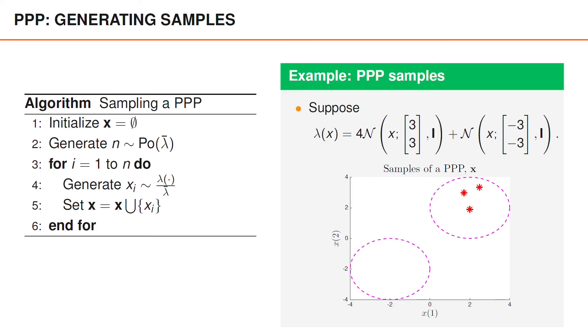For completeness, we can also visualize samples from a Poisson point process. To make things a bit more interesting, I have not assumed that the intensity function is constant within a certain area. Instead, I've assumed that it is a weighted sum of gaussians. If you look at the function, you can see that the first term integrates to four and the second to one, which means that the total integral is five. The Poisson rate is therefore five in this example, which means that the expected number of detections is five.